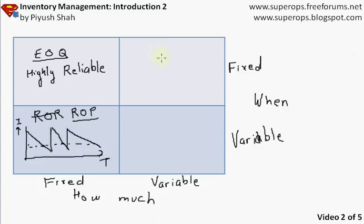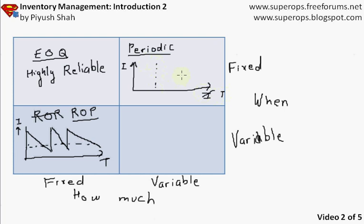When how much is variable but when is fixed, these systems are called periodic systems. In periodic systems, we create a period of review — say a week or a month. Every week I review and I have a target maximum inventory level. In one week I use up a certain amount, and I order just enough to fill the gap back to the target. The next week, if I use up less, the gap is smaller and I order less. So when I order is fixed, but how much I order depends on what I have used up.